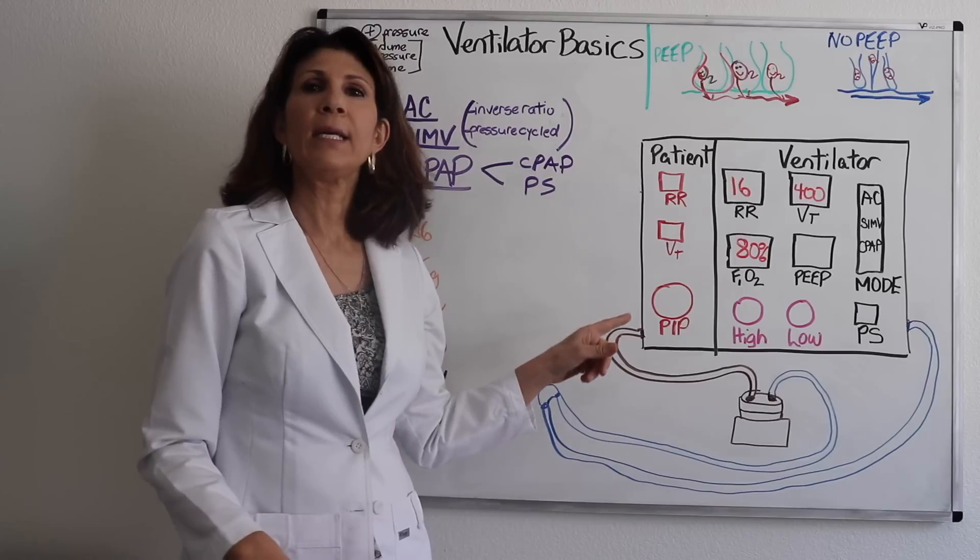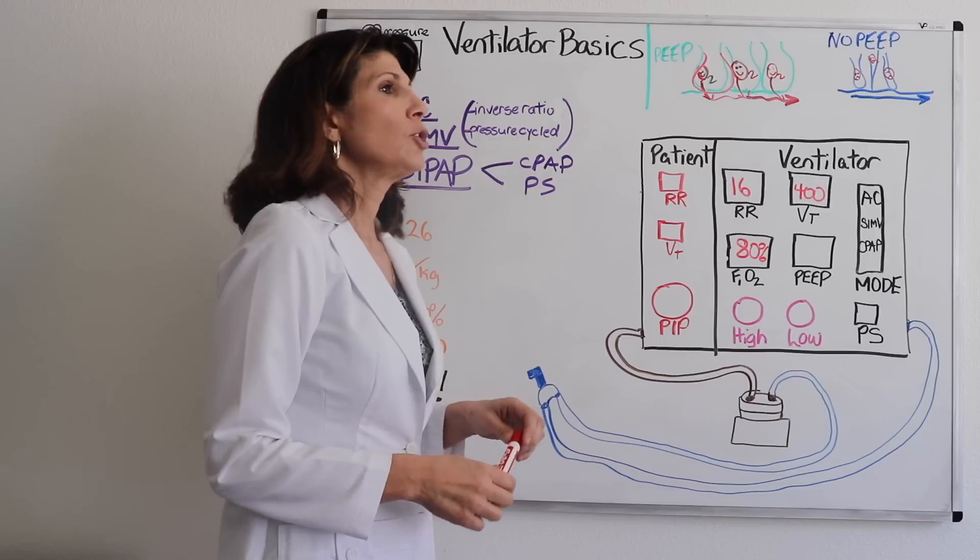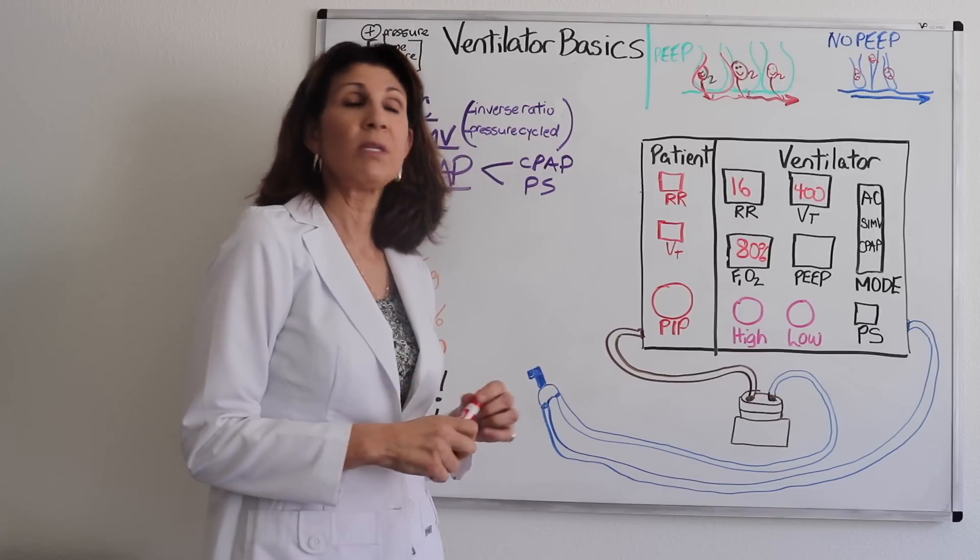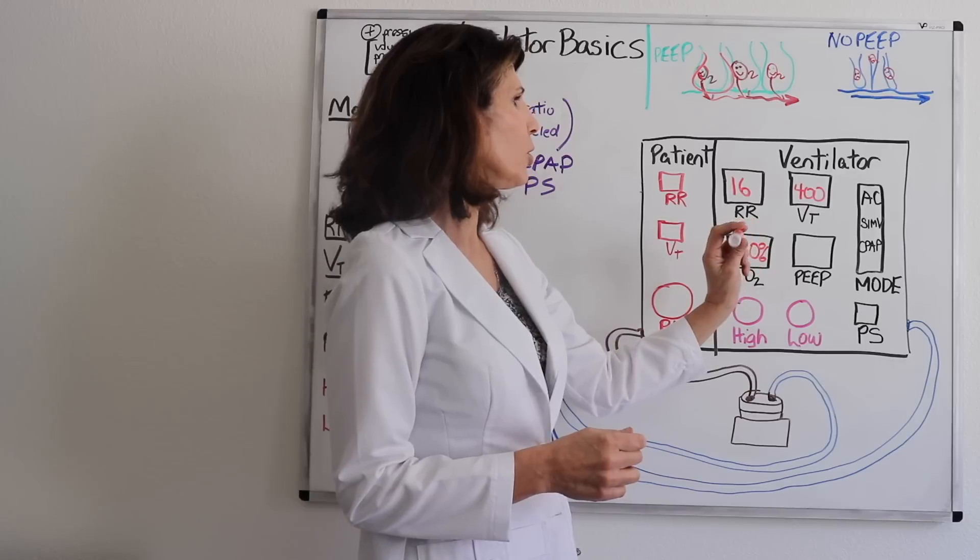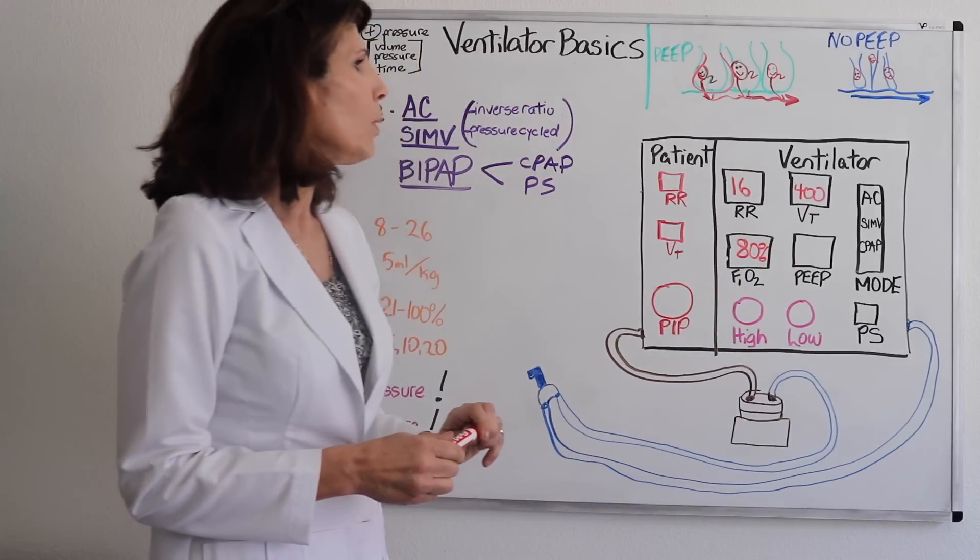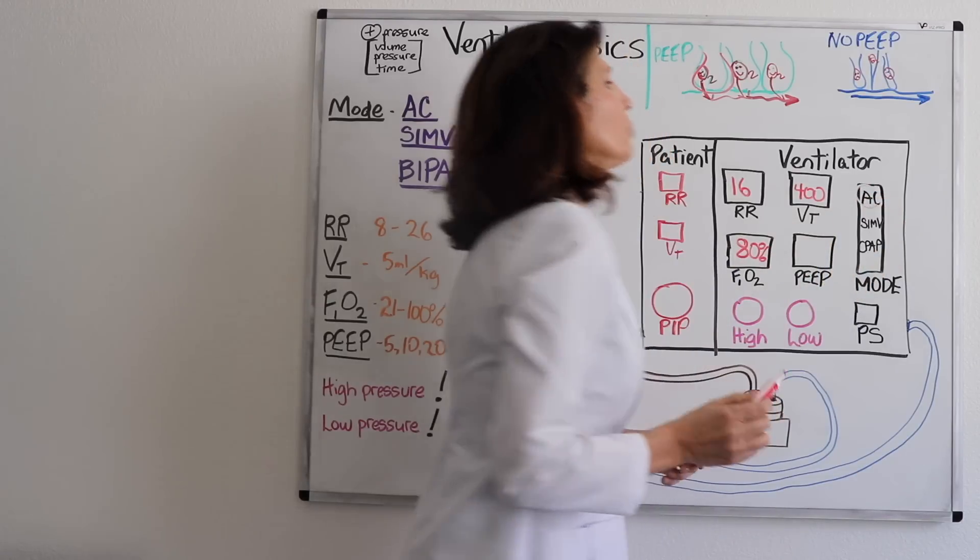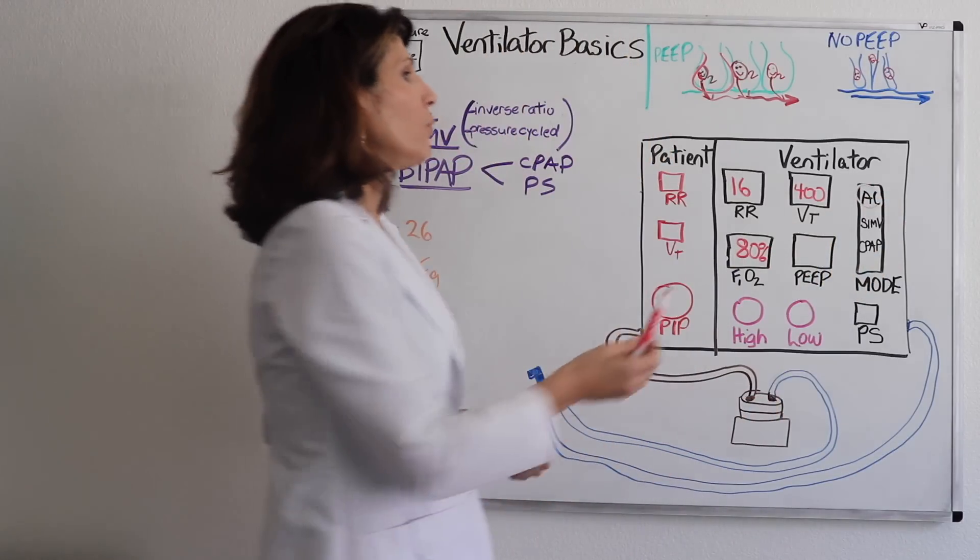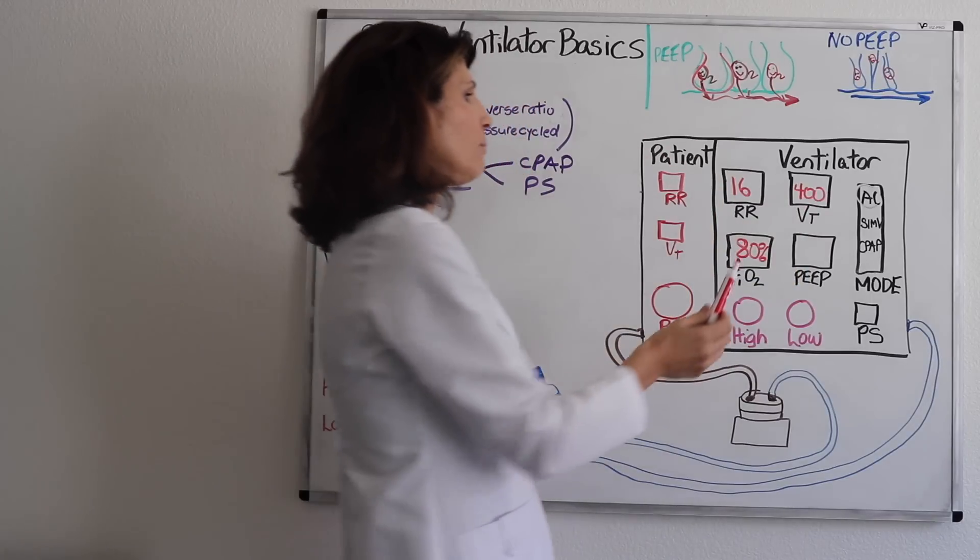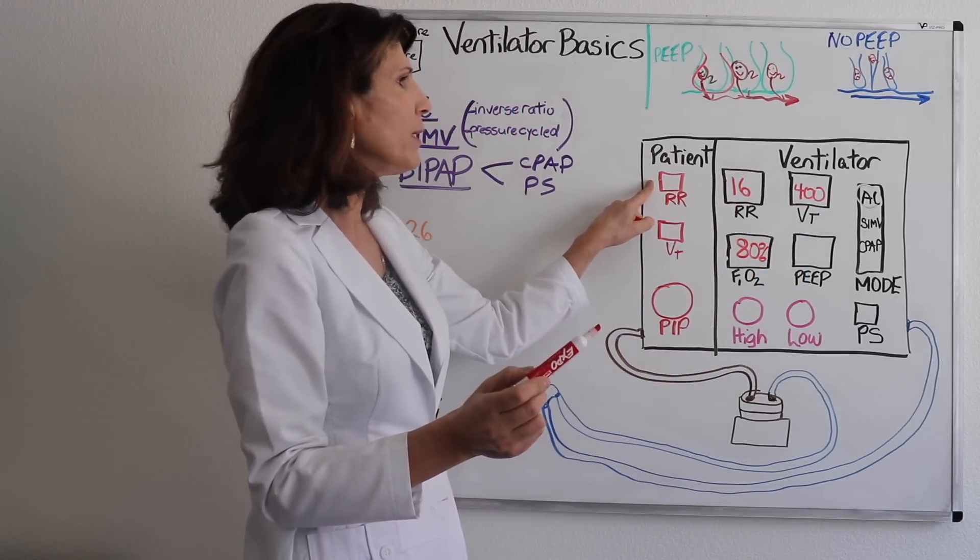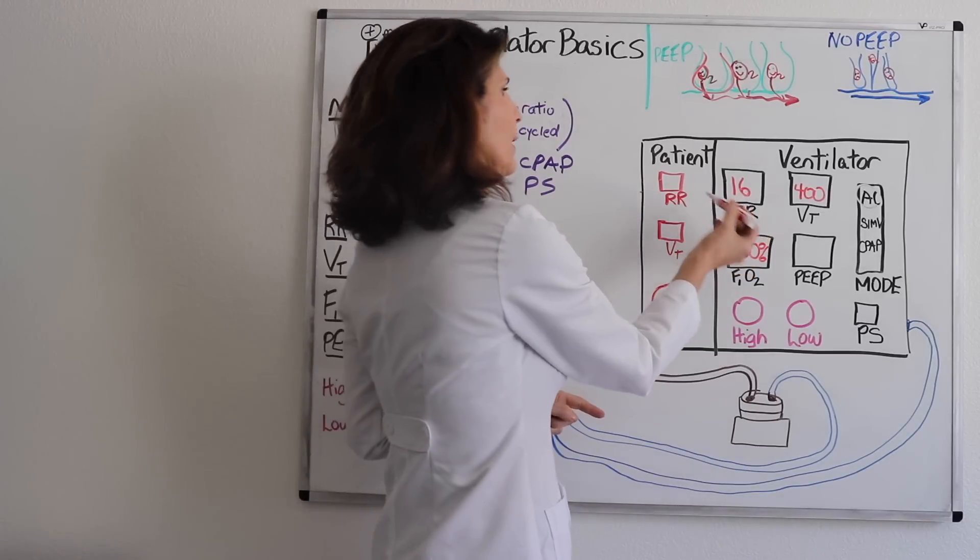So let's talk about these settings a little bit in the context of weaning. Remember, we want to try and get the ventilator off just as soon as we intubate it and attach them to that mechanical ventilator. So in this example, we put in a respiratory rate of 16, tidal volume of 400, FiO2 of 80%. And what mode are they on? Well, let's put them on the mode that is the most support. So the assist control mode. So the patient's going to receive 16 breaths and each breath is going to have a 400 milliliter tidal volume, FiO2 of 80%.